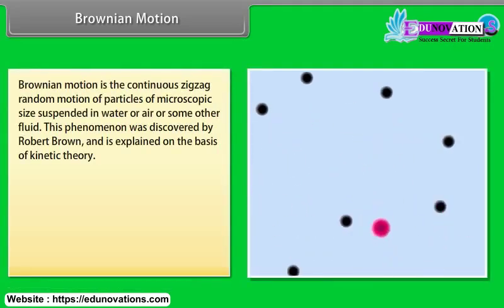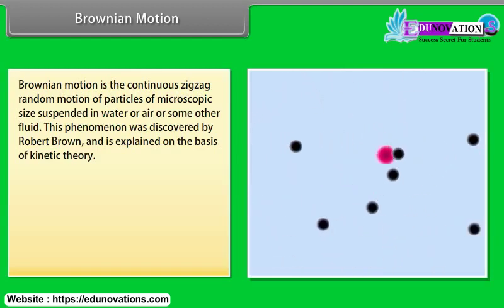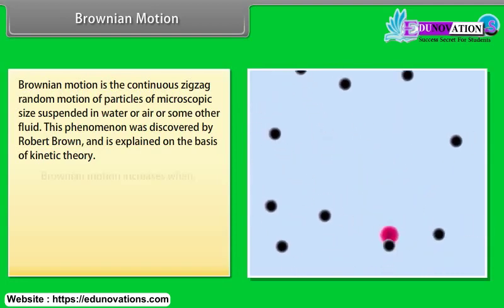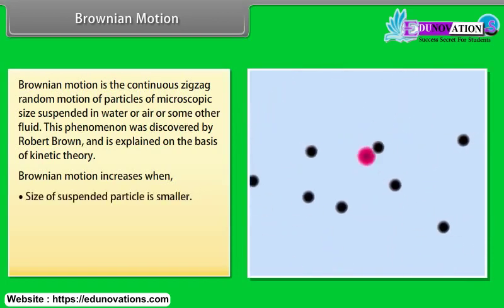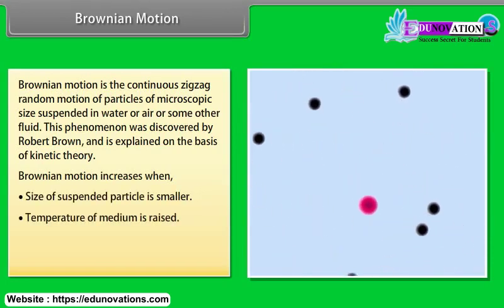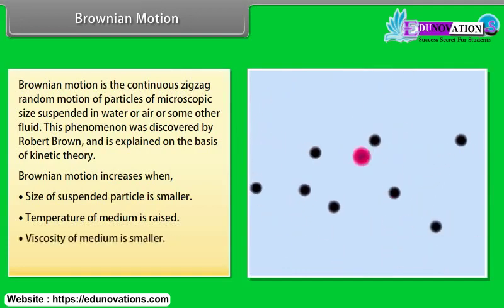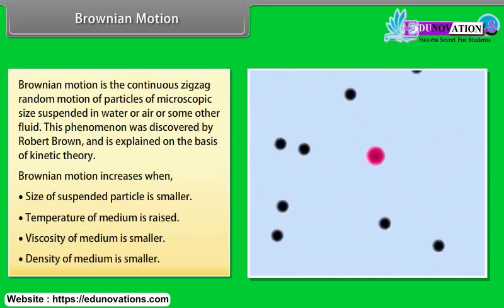Brownian motion is the continuous zigzag random motion of particles of microscopic size suspended in water or air or some other fluid. This phenomenon was discovered by Robert Brown and is explained on the basis of kinetic theory. Brownian motion increases when size of suspended particle is smaller, temperature of medium is raised, viscosity of medium is smaller, density of medium is smaller.